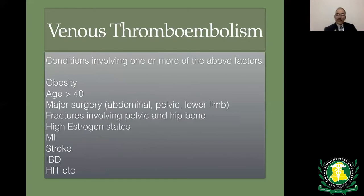Clinical conditions associated with increased risk of deep vein thrombosis and pulmonary embolism include obesity, age over 40, major surgery involving the abdomen, pelvis, or lower extremities, fractures, high estrogen state, stroke, inflammatory bowel disease, and heparin-induced thrombocytopenia.